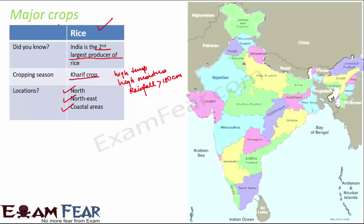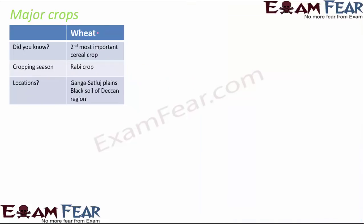However, in areas of low rainfall, rice can also be grown with proper irrigation. Some of the locations where rice is grown are north, northeast, and coastal areas — such as Odisha, Andhra Pradesh, Tamil Nadu, and West Bengal — which are prime regions for rice cultivation.